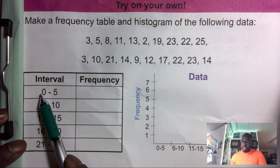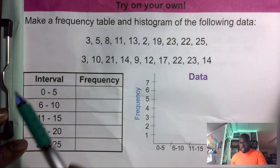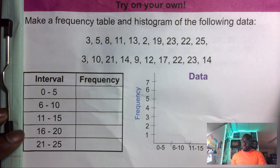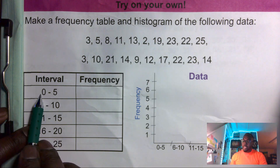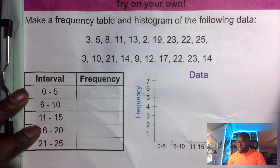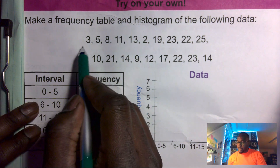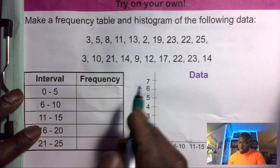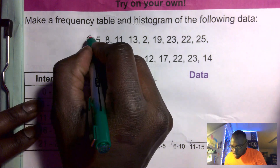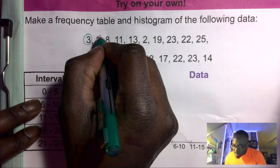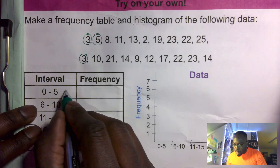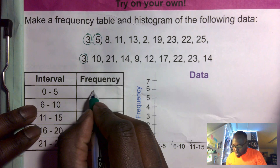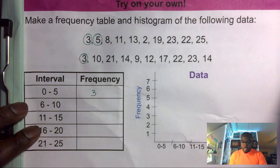Here we have different intervals: zero to five, six to ten, etc. The first thing we're gonna do is identify all the numbers that fall in each interval range. For zero to five, we go through the data and pick out all numbers that fall between zero and five. I find one, two, three — so the frequency is three.